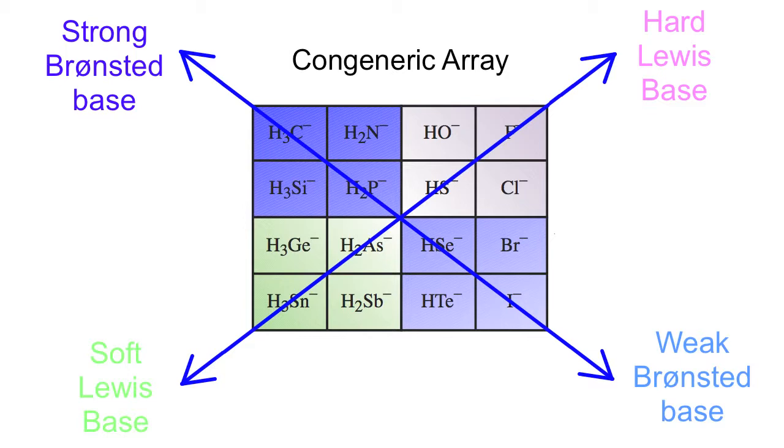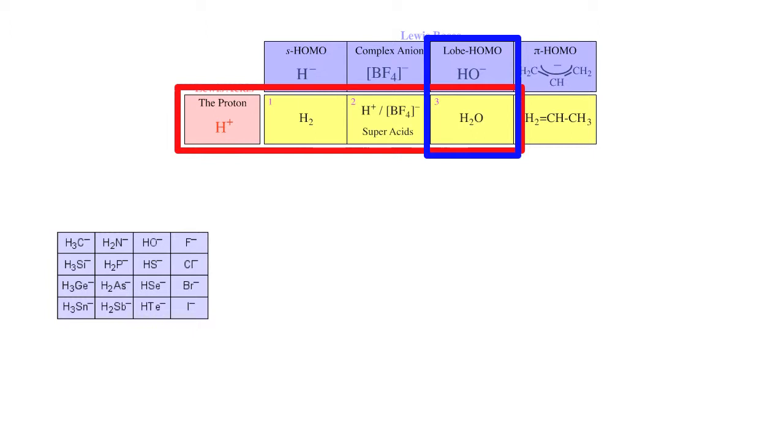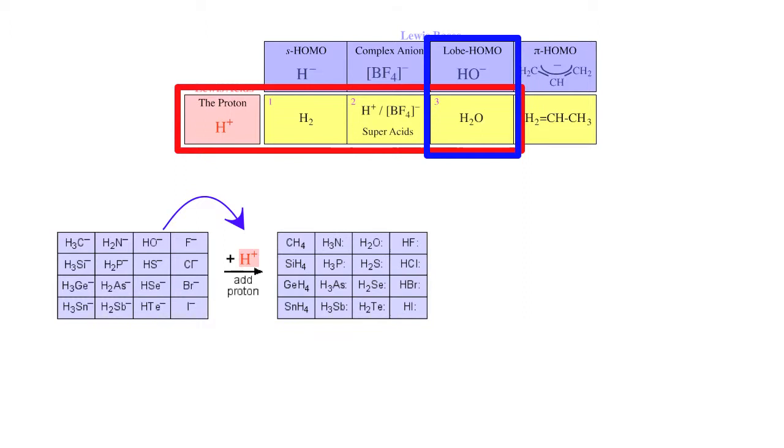On one diagonal of this congeneric array we have hard and soft Lewis bases using the Pearson HSAB type analysis, and on the other diagonal we go from strong Bronsted abstracting bases to very weak Bronsted proton abstracting bases. So we can protonate this entire array of conjugate Bronsted acids, but these Bronsted acids are also Bronsted bases and these can be protonated to give us a further congeneric array of Bronsted acids.